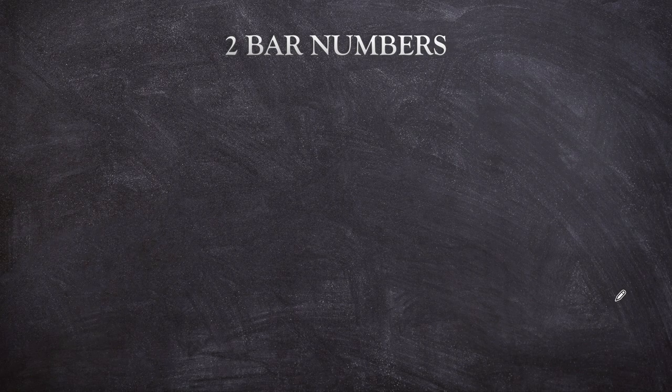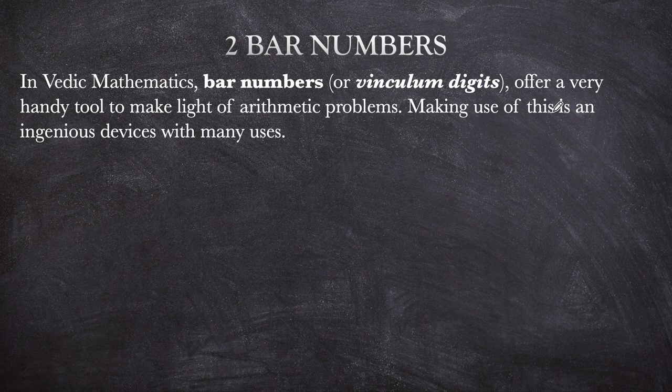In Vedic Mathematics, bar numbers or vinculum digits offer a very handy tool to make light of arithmetic problems. Making use of this is an ingenious device with many, many uses.